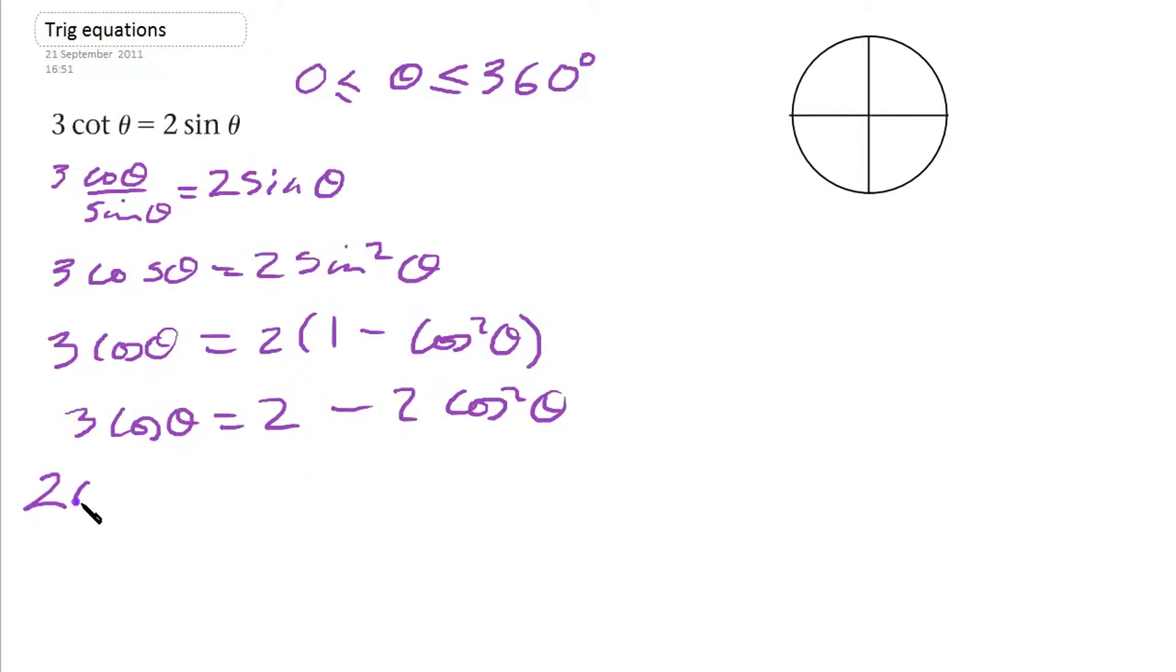So we get 2 cos squared theta plus 3 cos theta minus 2 equals 0. So we've taken the 2 away from here, and added the minus 2 cos squared theta, and we end up with 2 cos squared theta on this side.